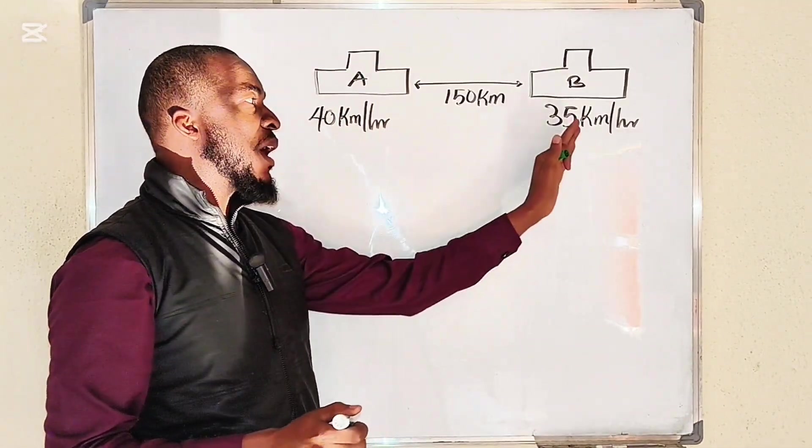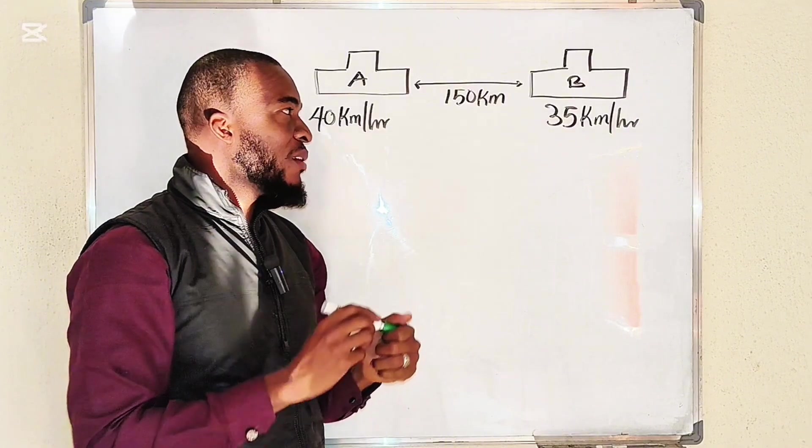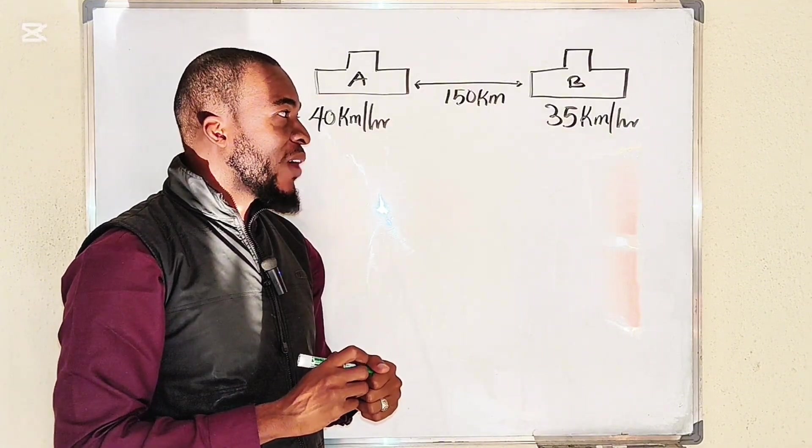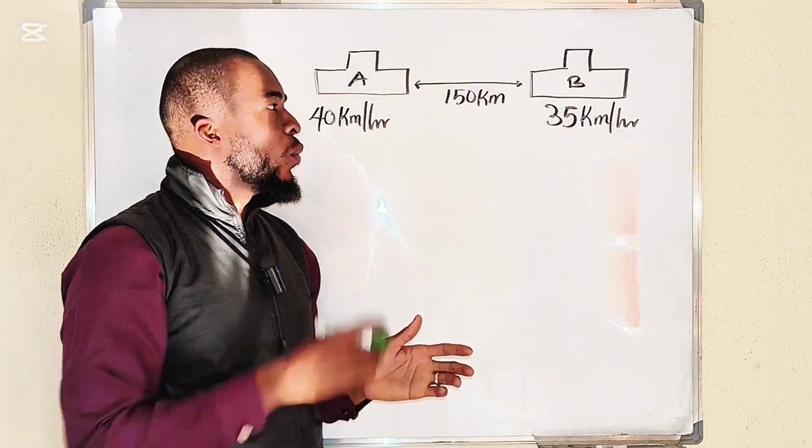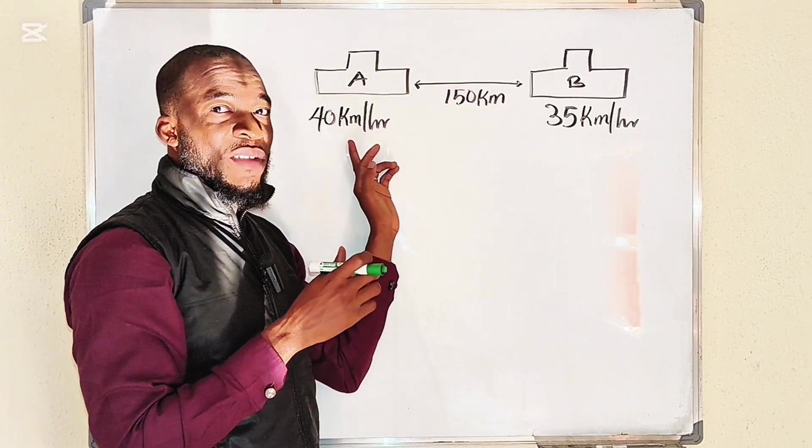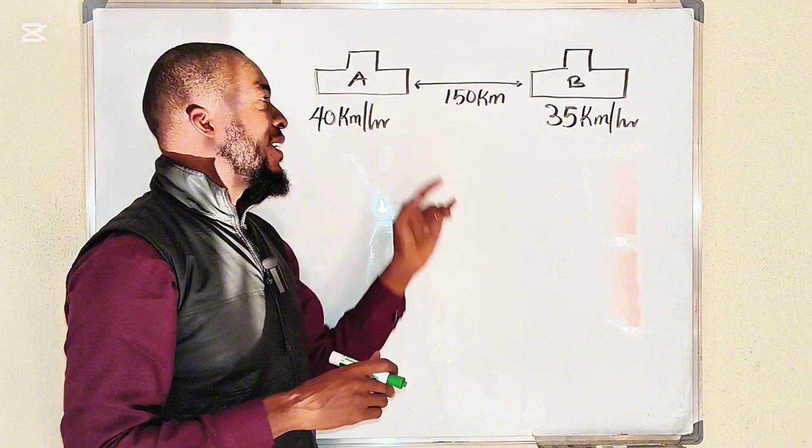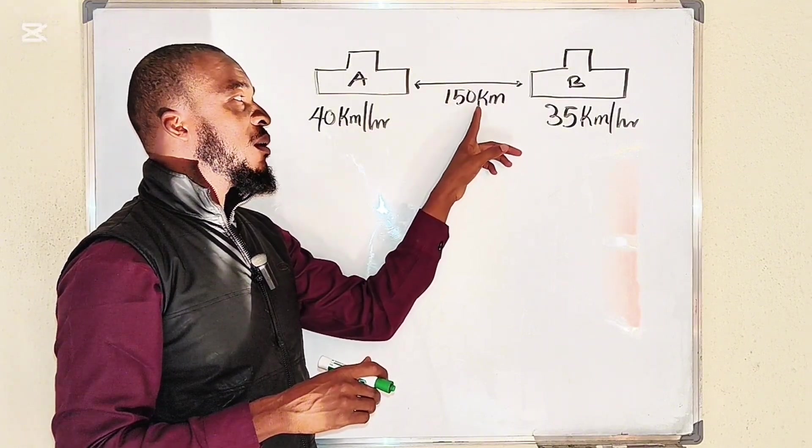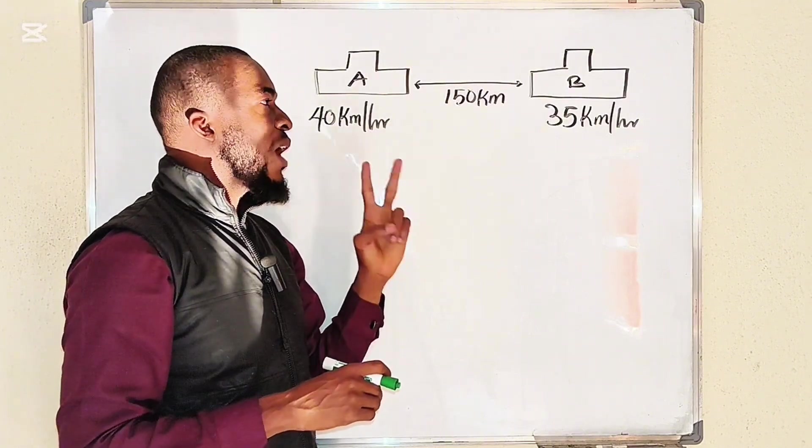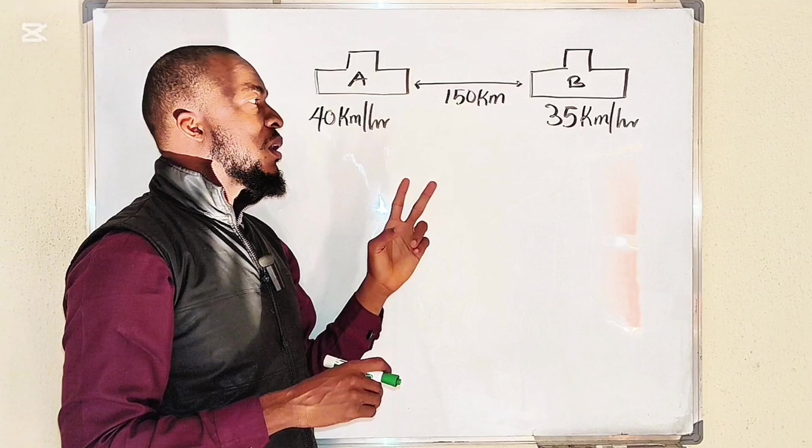Car B is moving faster, and the distance between them at the initial point is 150 km. So we have two questions here: the first question is when are they going to meet each other, and what will be the distance covered by each car at that particular point.